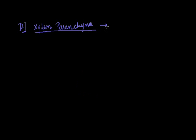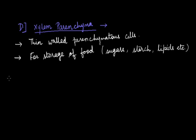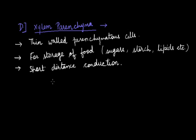The fourth type of xylem element is xylem parenchyma. Unlike the above three types — tracheids, vessels, and xylem fibers — xylem parenchyma cells are living. These are thin-walled parenchymatous cells. Their basic purpose is storage of food, and they also help in short-distance conduction. Since they are living cells, a nucleus is also present.